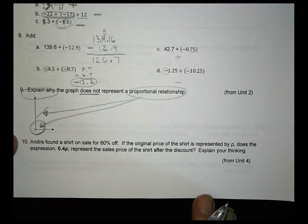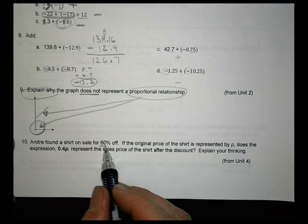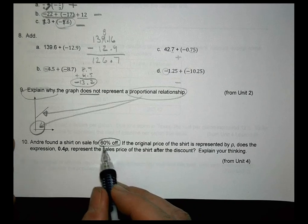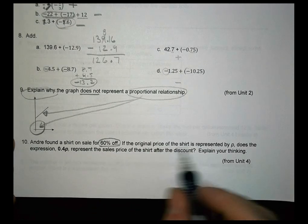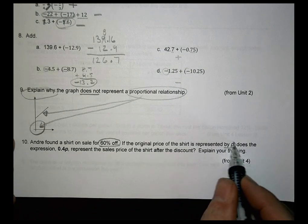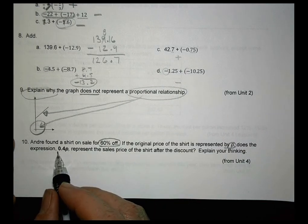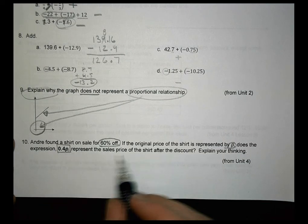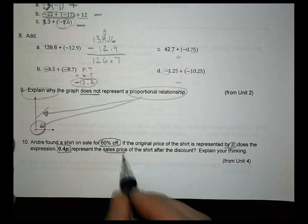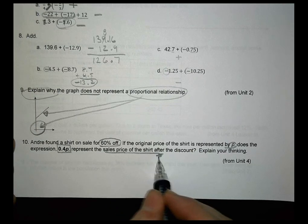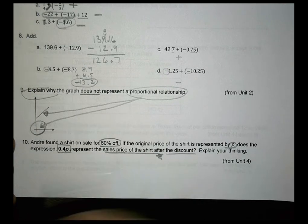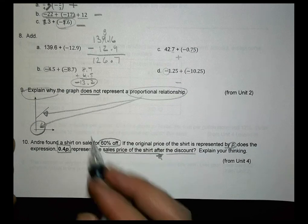And number 10, finally. It says Andre found a shirt on sale for 60% off. What a deal. If the original price of the shirt is expressed by P, does the expression 0.4P represent the sales price of the shirt after the discount? Explain your thinking.